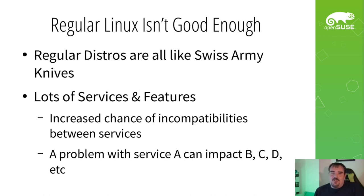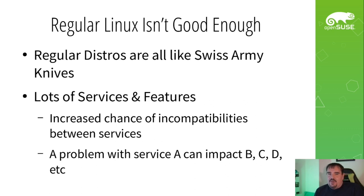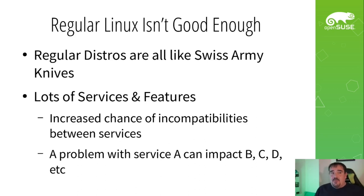Regular distributions are like Swiss Army Knives — there's a ton of services and features, but those tons of services and features end up being the biggest problem. There's always an increased chance that they're going to be incompatible, or adding some new service breaks some other service. I've had plenty of cases where even really well-managed machines have an issue on service A, which then causes a cascading failure with different services B, C, D, E, etc. It can be a real nightmare digging down, figuring out the root cause, analyzing that, and then bringing the system back up and running.